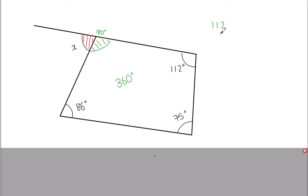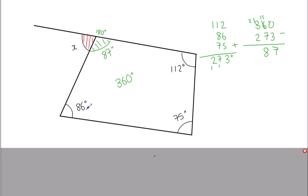Adding up what we've got: 112 add 86 add 75 gives us 273 degrees. Taking that away from 360 because it's a quadrilateral, we get 87 degrees — that's the green angle inside the quadrilateral. Now using the 180 degree rule: 180 take away 87. I'm going to have to borrow: 10 take away 7 is 3, 17 take away 8 is 9. The angle outside — angle X — must be 93 degrees, because they're on a straight line and add up to 180.